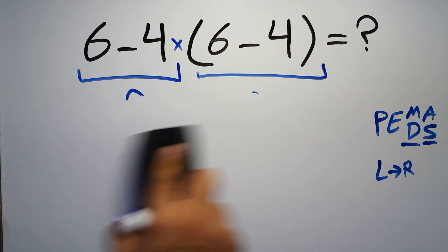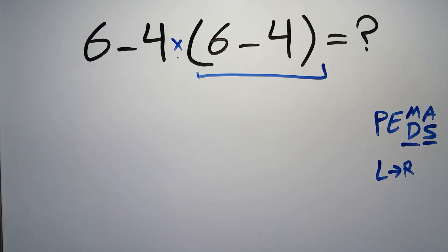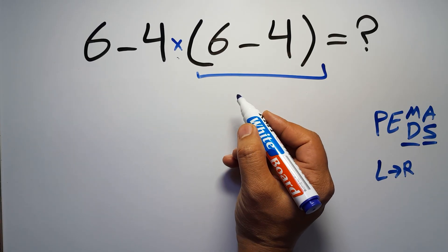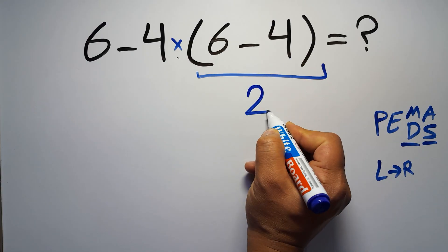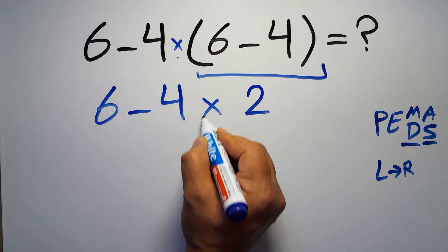So first this parentheses. Inside this parentheses we have 6 minus 4, which equals 2. So 6 minus 4 times 2.